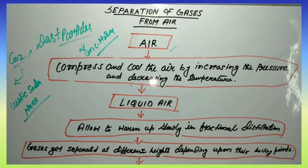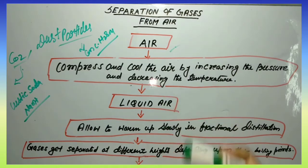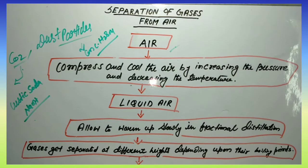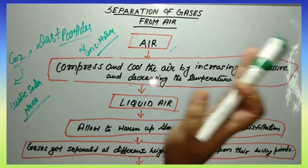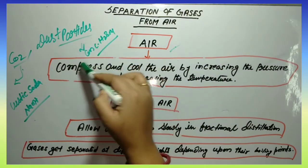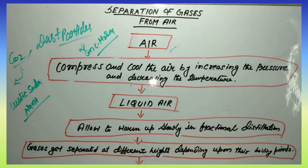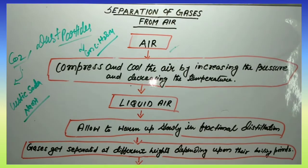This is very important, students — the question of how to liquify gas or air is asked very frequently. The answer: by increasing the pressure and decreasing the temperature, we can convert air to liquid air. Now, what remains? Oxygen, argon, and nitrogen are left to be separated, because carbon dioxide and dust particles were already removed by caustic soda and concentrated H2SO4. After liquefying the air, we allow it to warm up slowly in fractional distillation.